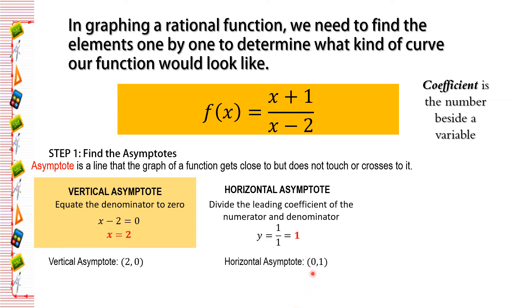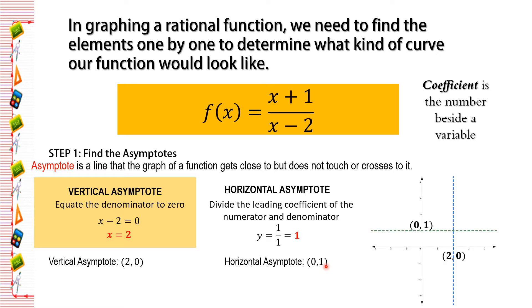The point for the horizontal asymptote is (0, 1). After finding the vertical and horizontal asymptotes, we plot them on the Cartesian plane. The dotted green line refers to the vertical asymptote, and the dotted blue line refers to the horizontal asymptote.